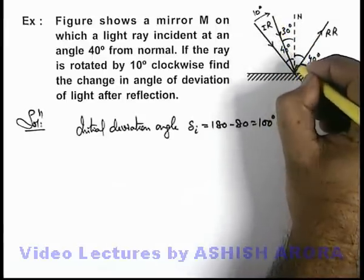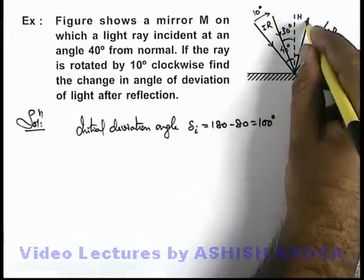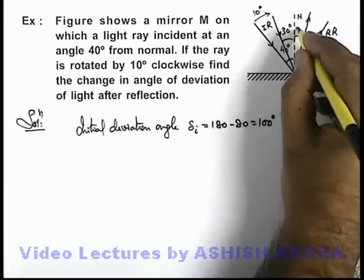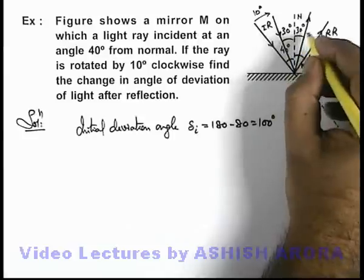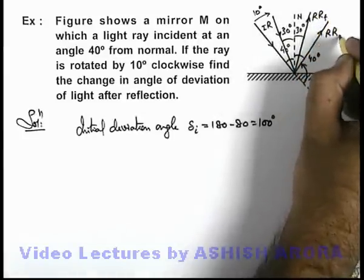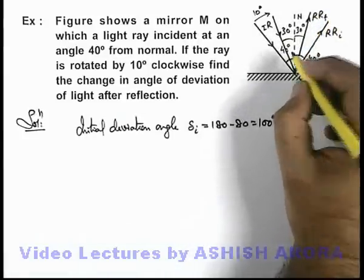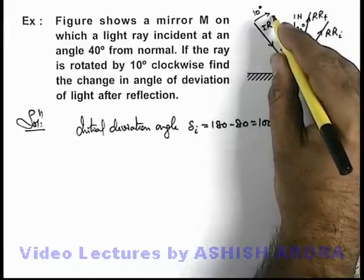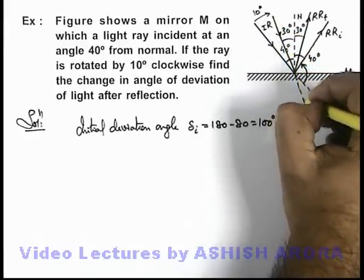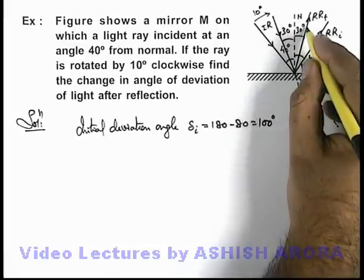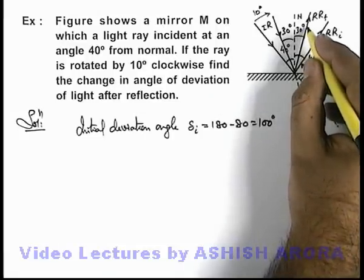In this situation, if this is the new position of incident ray, the final reflected ray will also be going at an angle 30 degrees from the normal. This will be RR final if this was RR initial. In final state, the incident ray would be moving in this direction and this will be the final reflected ray.